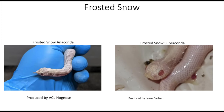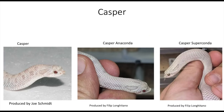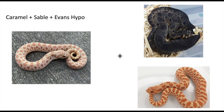Next, when we combine caramel xanthic Evans hypo we get what's called a Casper. So we have the regular version, the anaconda version, and the superconda version. It reminds me of something in between a snow and a toxic — it almost looks like a toxic with red eyes, which is pretty cool.